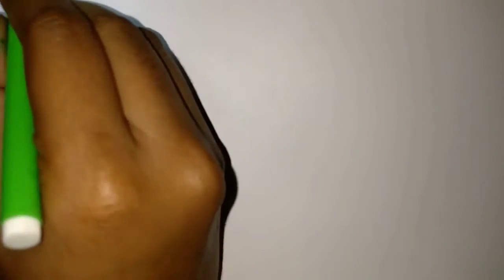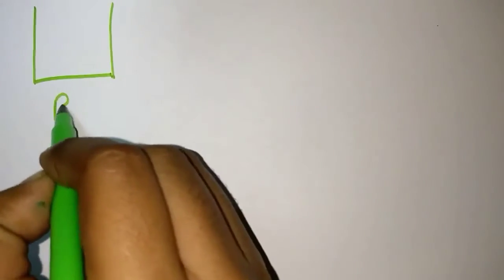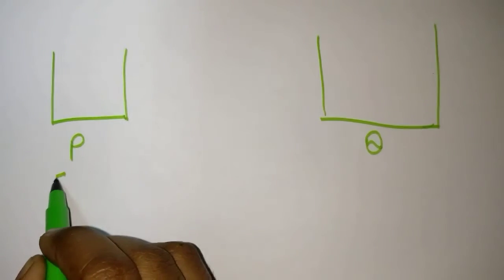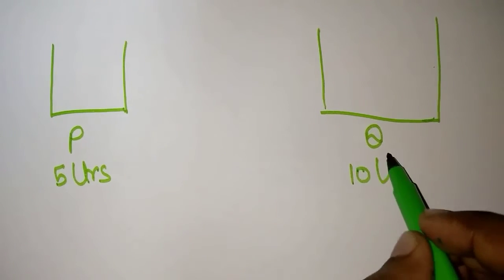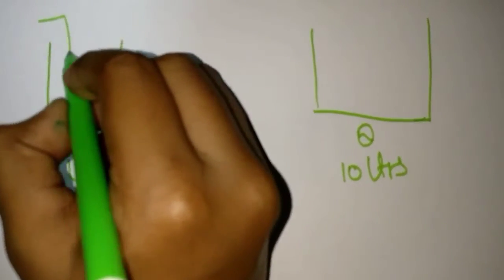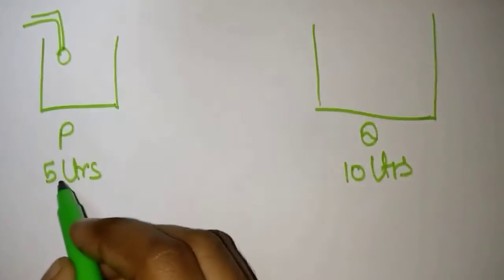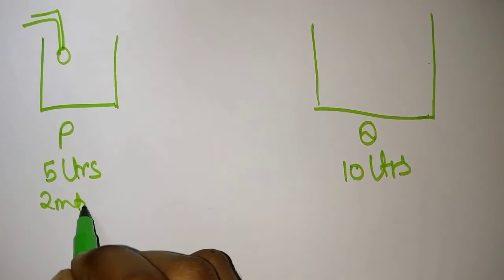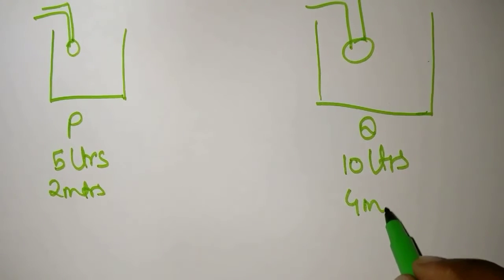Consider two tanks P and Q with capacity of 5 litres and 10 litres respectively. The pipe needed to fill tank P is 2 metres by width whereas the pipe needed to fill Q tank is 4 metres by width.